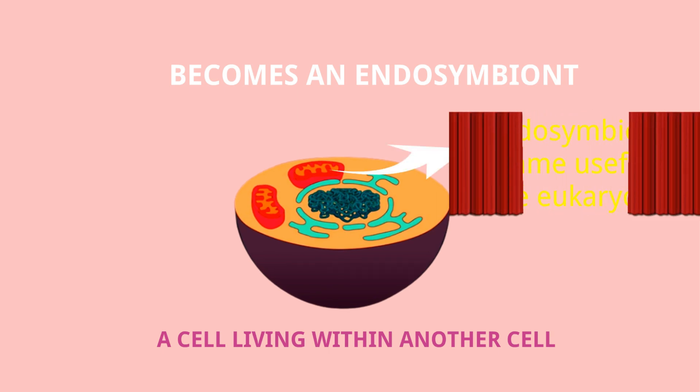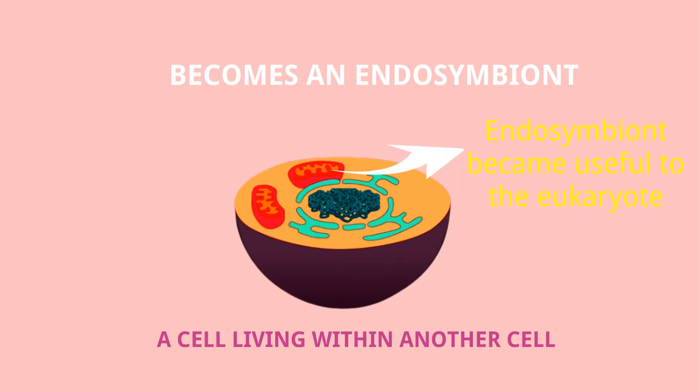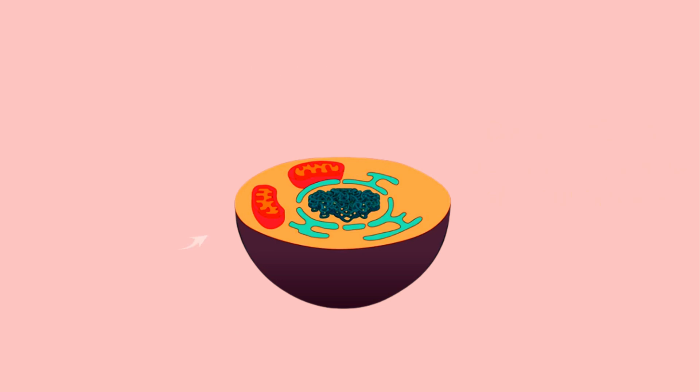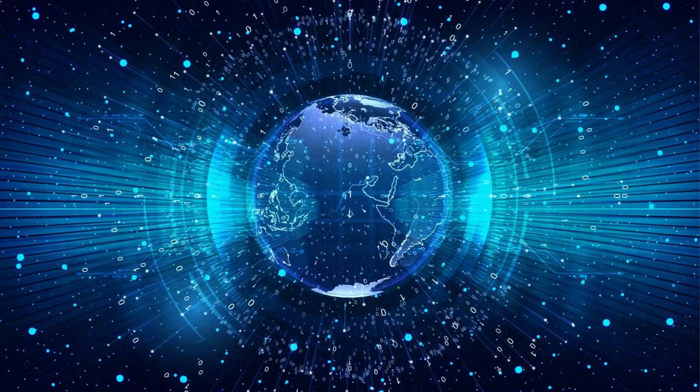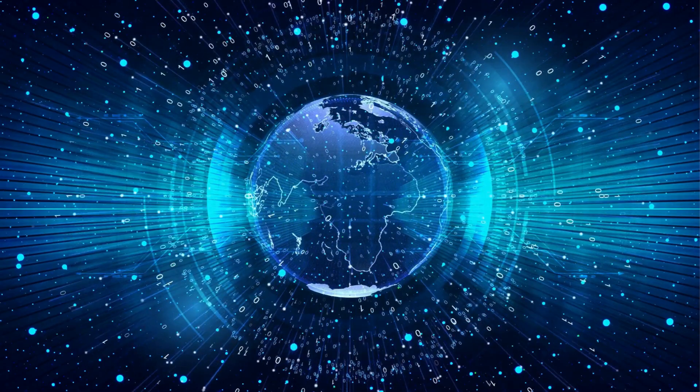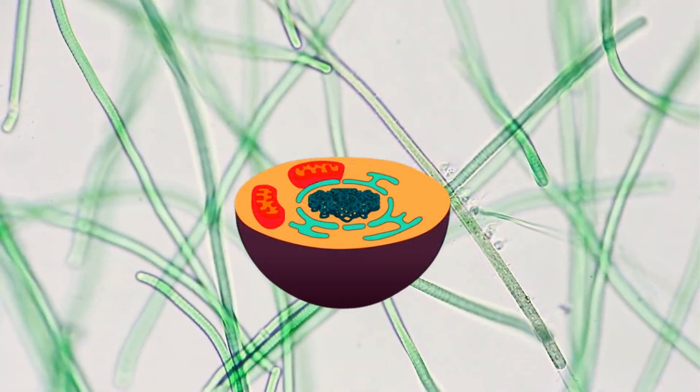Funny enough, this endosymbiont became useful to the eukaryote. The aerobic prokaryote was able to use oxygen to make energy, a process called respiration, which was nice because the earth's oxygen concentrations were increasing at this time due to the activity of cyanobacteria.